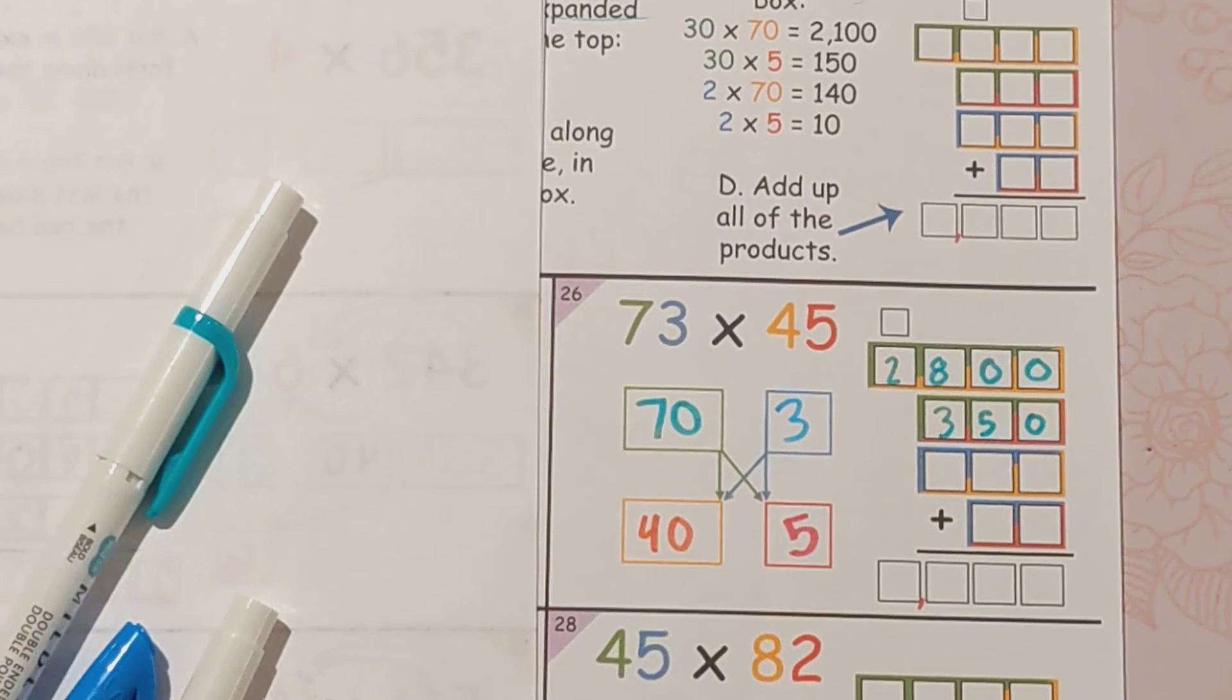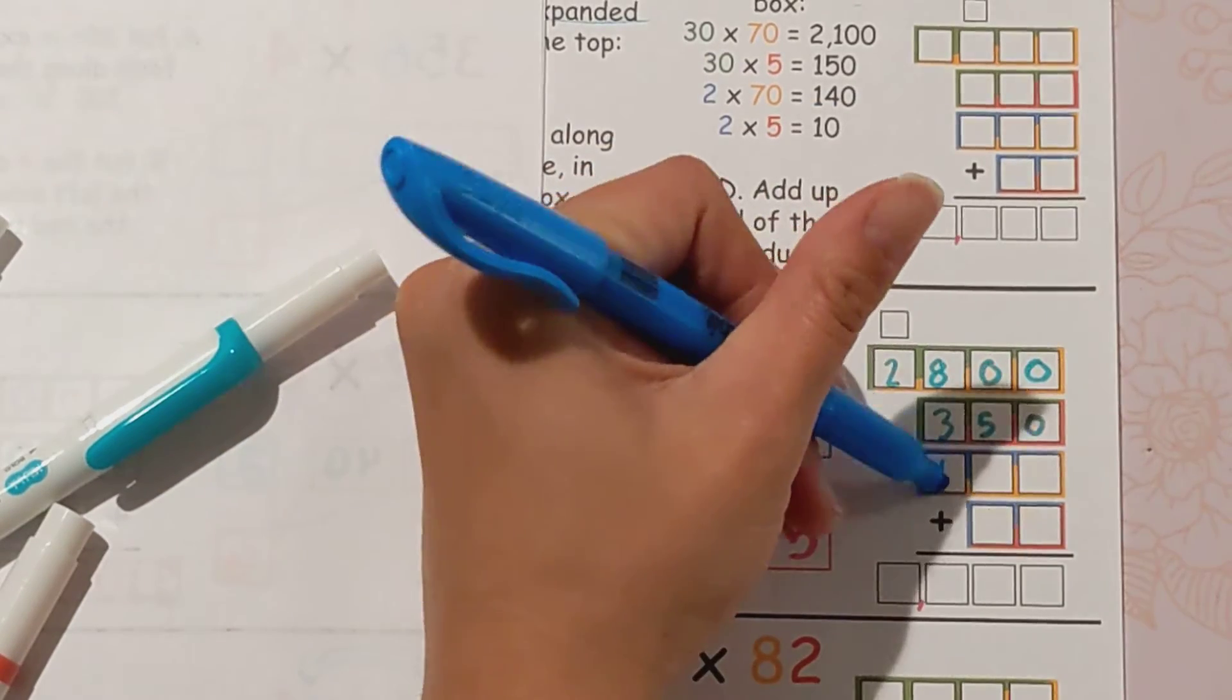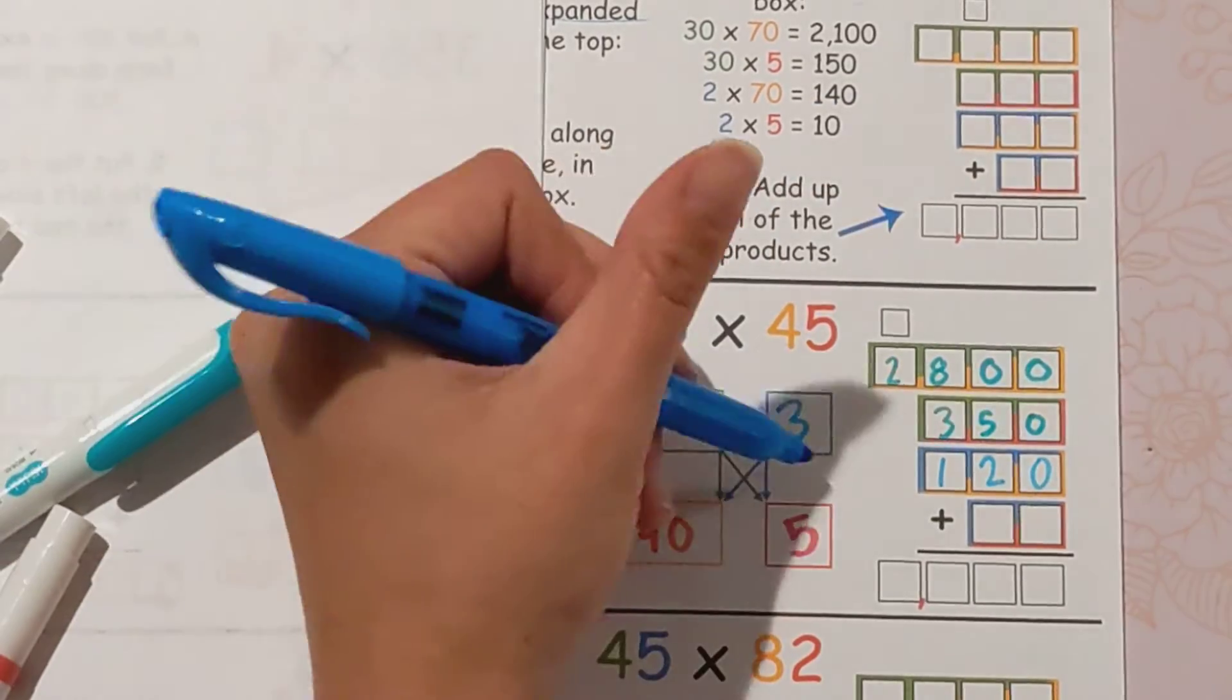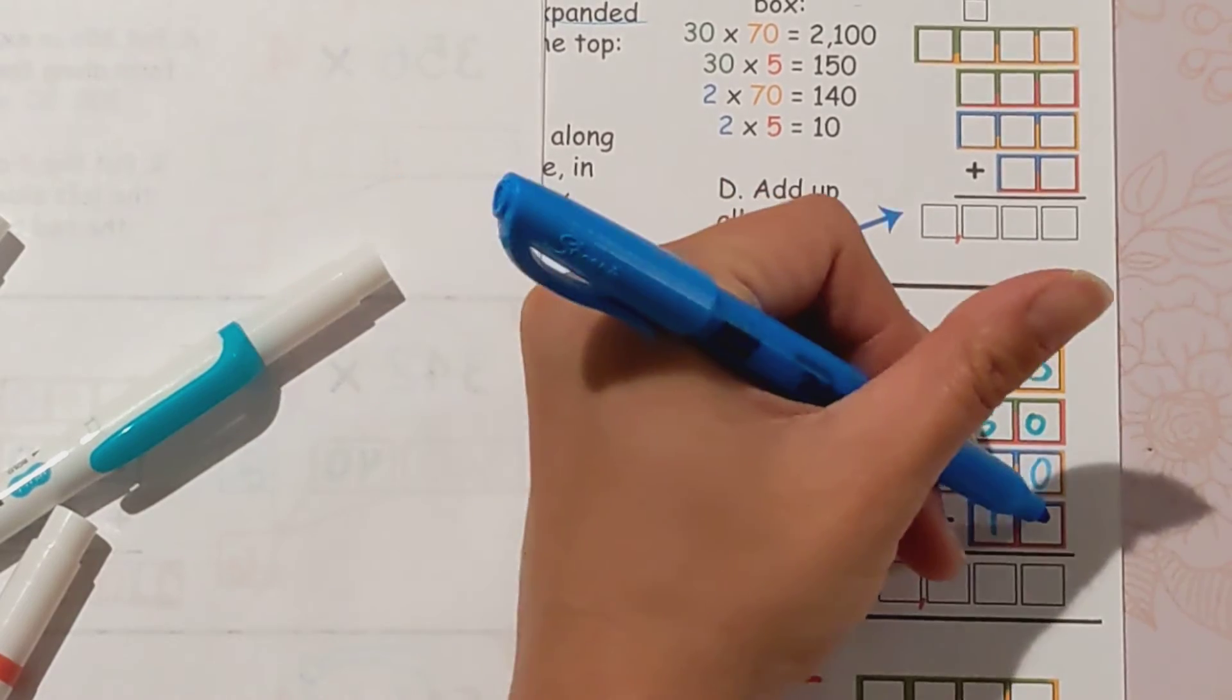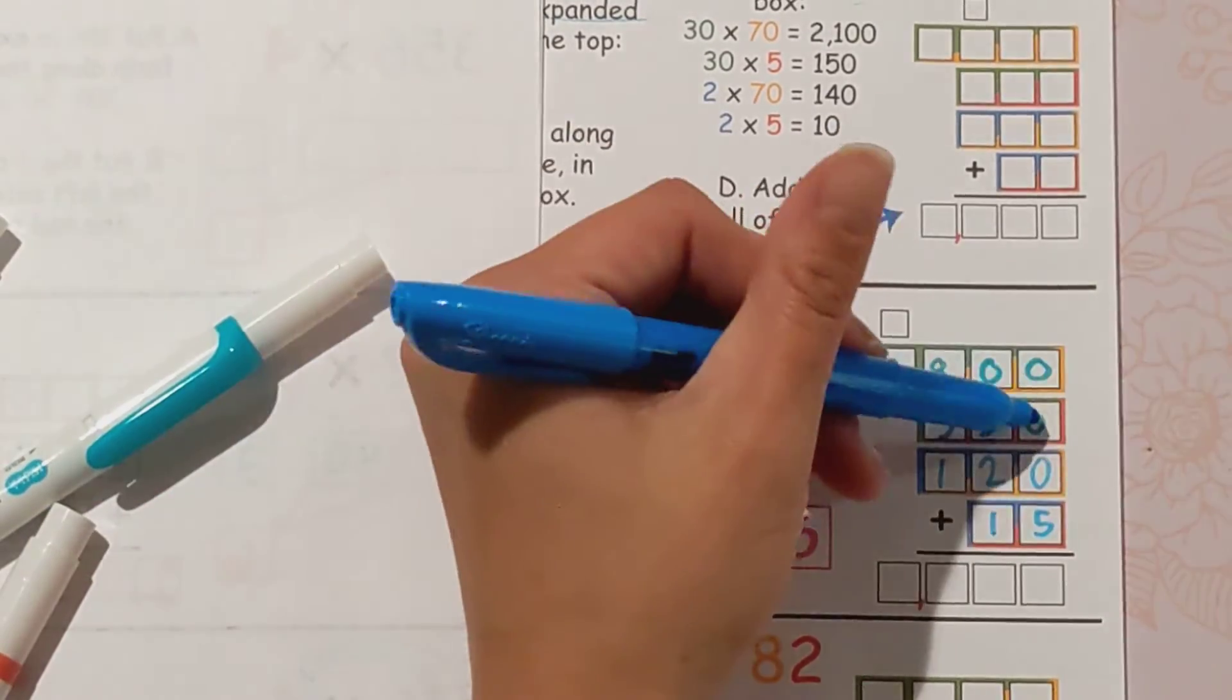So three times 40: you're going to do three times four which is 12 with a zero, 120. And then three times five which is 15. Last step: add them all together and you'll be finished.